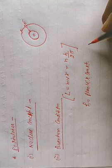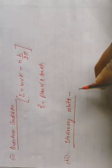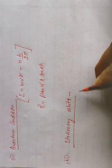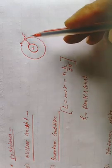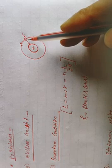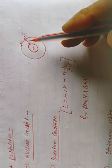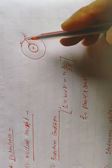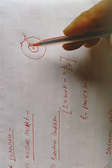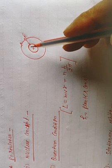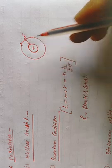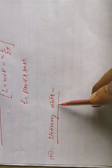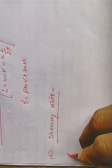h की value होती है 6.6 × 10⁻³⁴। Stationary orbits क्या थीं? ये non-radiating orbits होती हैं जिन्हें stationary orbits कहते हैं।